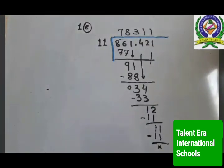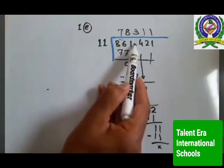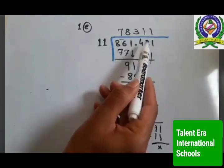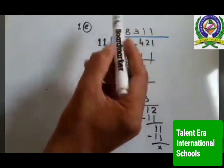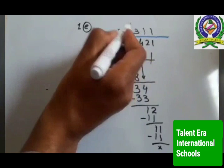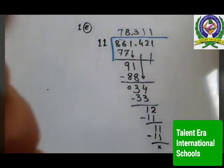This is simple division which you have learned in previous classes. Now I will place the decimal point. After the decimal, how many digits are there? 1, 2, 3. So count from the right side: 1, 2, 3 — after 3 digits you will place your decimal point here. This is your required answer.